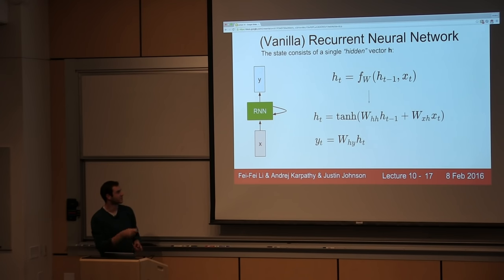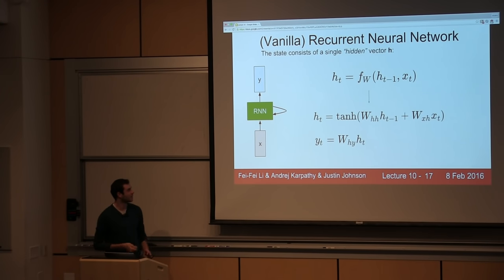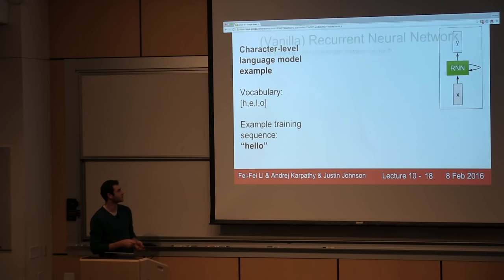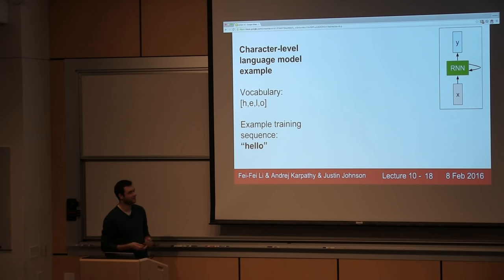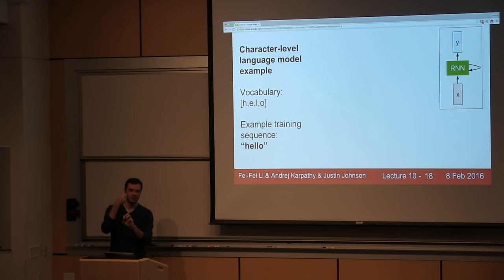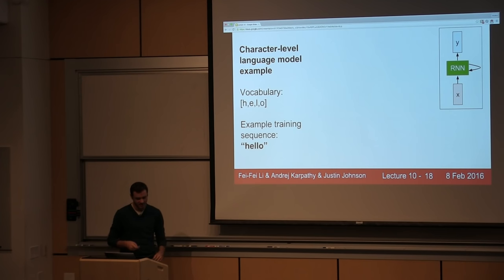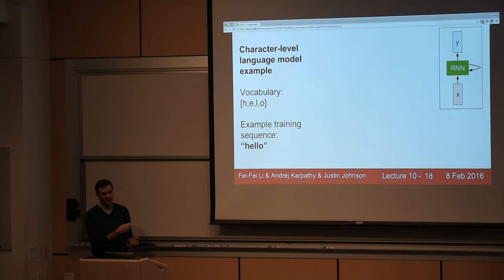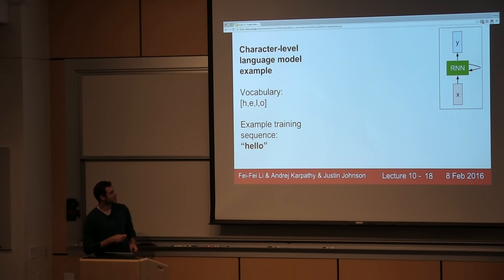One of the ways we can use a recurrent neural network is in the case of character-level language models. We feed a sequence of characters into the recurrent neural network, and at every single time step we ask it to predict the next character in the sequence — predicting an entire distribution over what it thinks should come next. In this very simple example, we have the training sequence 'hello' with a vocabulary of four characters: h, e, l, and o. We try to get a recurrent neural network to learn to predict the next character in a sequence on this training data. We feed in every one of these characters one at a time, encoding characters using a one-hot representation where we turn on the bit corresponding to that character's order in the vocabulary.